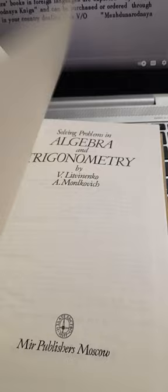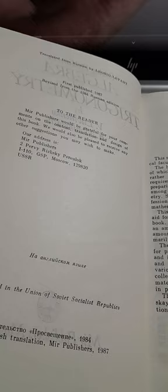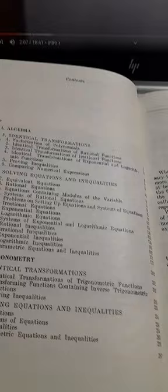This book is in very good condition. It was published in 1987. The contents include Algebra Part 1 on identical transformations and solving equations and inequalities, then Part 2 is Trigonometry with identical transformations and solving equations and inequalities.